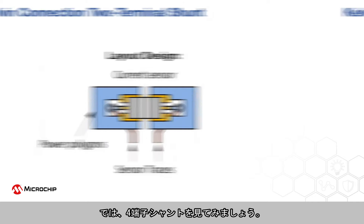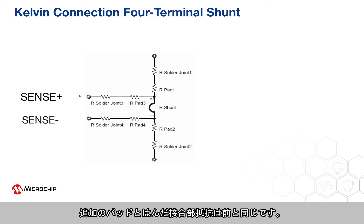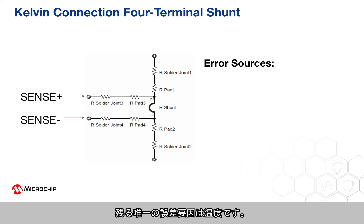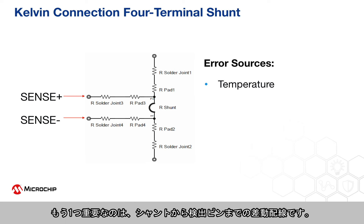The four-terminal shunt has two additional terminals connected directly to the shunt and separated from the high-current path of the other two terminals. The additional pads and solder joint resistance is the same as before, but the current that passes through them is negligible because the sense pin input current is less than ±7 microamps, as shown in the datasheet. The only error source that remains is temperature. That's why it's important to choose a shunt with a very low temperature coefficient of resistance and a power rating large enough to keep the temperature of the shunt low, even at high currents.